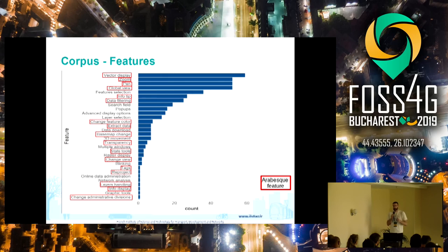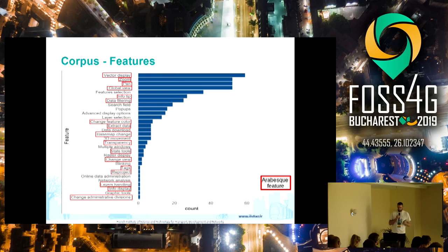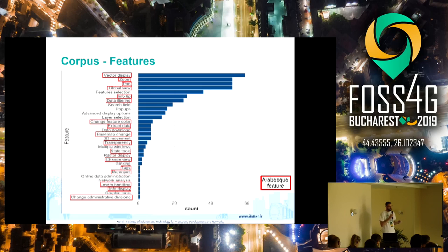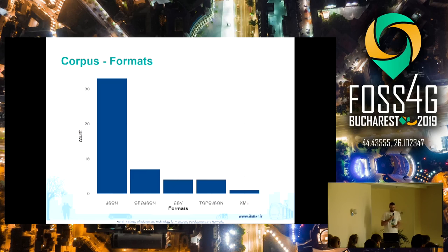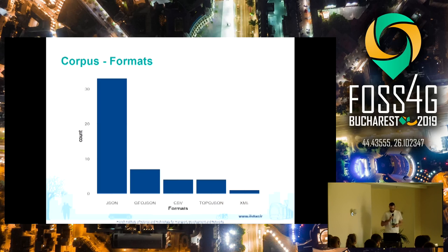We gathered information on features provided by these applications. Some are very common, like zooming, panning, adding vector data, and filtering. Others are less common, like ray projection, transparency handling, and changing administrative layout. We implemented both common and less common features in the Arabesque application. Most web apps use JSON and JSON-family data formats; a few use CSV. We chose to use CSV files for flow data and GeoJSON for the nodes.